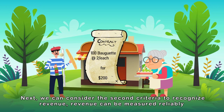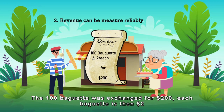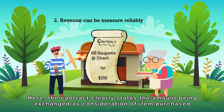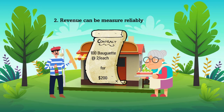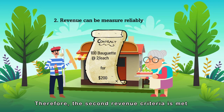Next, we consider the second criteria: revenue can be measured reliably. The 100 baguettes were exchanged for $200, meaning each baguette is $2. The contract clearly states the amount being exchanged as consideration for the item purchased. We can certainly conclude that revenue can be measured reliably in this case. Therefore, the second revenue criteria is met.